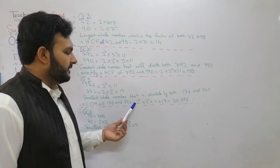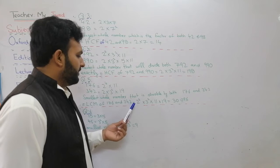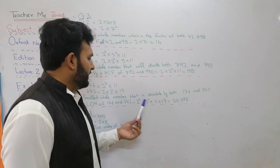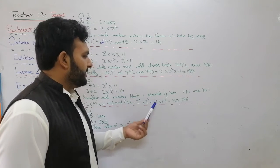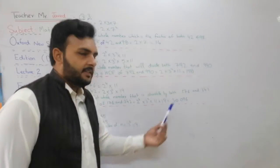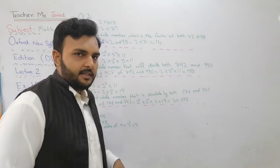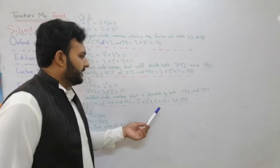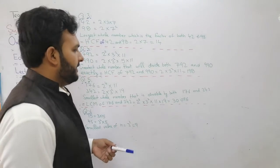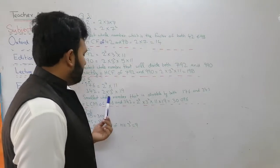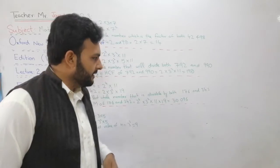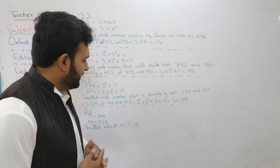The LCM of 176 and 342 is equal to 2⁴ × 3² × 11 × 19. After multiplication, we get 30,096. So 30,096 is the smallest whole number that is divisible by both 176 and 342.